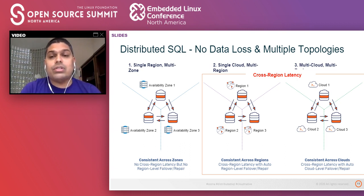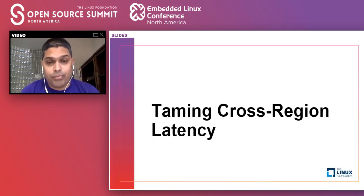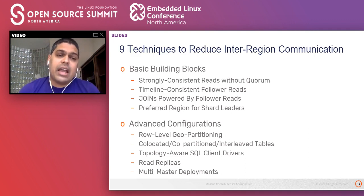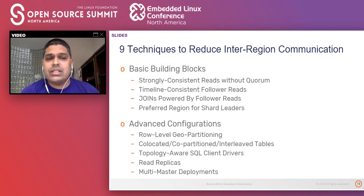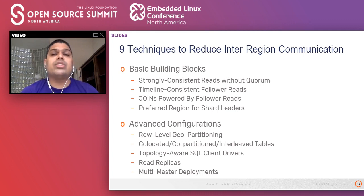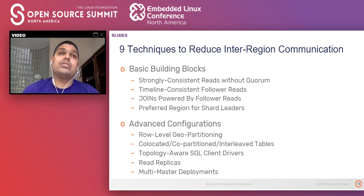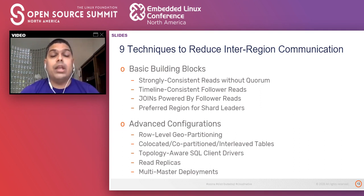For the rest of the talk, I'll focus on how to mitigate these cross-region latency problems — hence the title 'Taming Cross-Region Latency.' We'll look at nine different techniques to reduce inter-region communication, categorized into two blocks. One is the basic building blocks — constructs that are transparent to the application; your data modeling does not need to change. There are also some advanced configurations where you can reduce even more cross-region communication, but those require building your data model a little bit differently to exploit the power of distributed SQL.